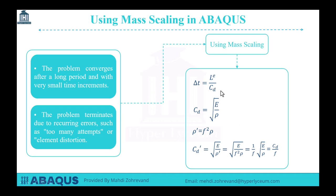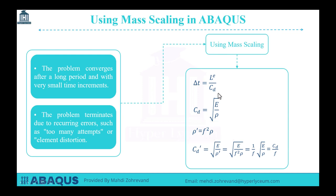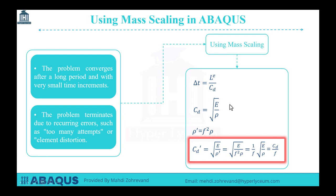Assuming the element length remains constant, if we reduce the value of C, we can increase the value of delta t. To decrease C, we can consider a virtual density obtained by multiplying the density by a scale factor F squared. In Abacus software, I will show you where this is set. By substituting this virtual density into the formula for C, we obtain a new C prime.